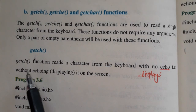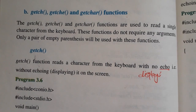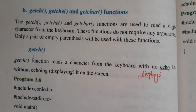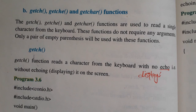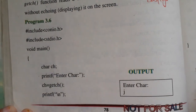The getch function reads a character from the keyboard - keyboard سے character read کر لیتا ہے لیکن screen پہ display نہیں کرتا، وہ آپ کو نظر نہیں آتا۔ جب keyboard سے آپ a, b, c کچھ بھی enter کر لے تو getch اس کو accept کر لیتا ہے لیکن screen پہ دیکھاتا نہیں ہے۔ Echo کا مطلب ہے display۔